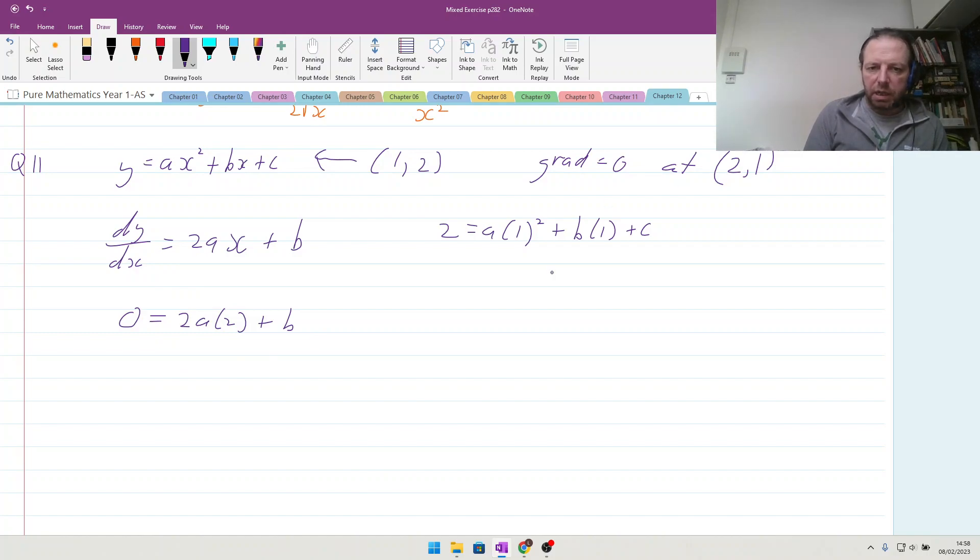And we also know that the point goes through here. So let's just tidy up this one, we end up with 2 equals a plus b plus c. Substituting this (2, 1) into this equation because it goes through this point as well, we end up with 1 is equal to a times 2 squared plus b times 2 plus c.